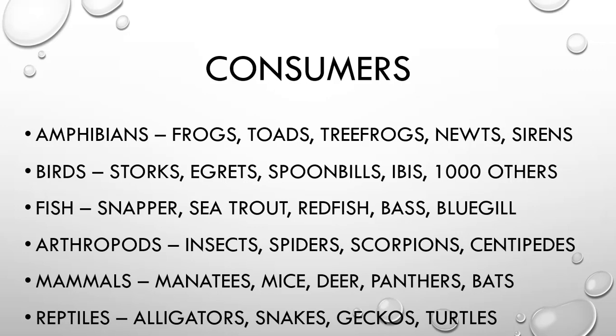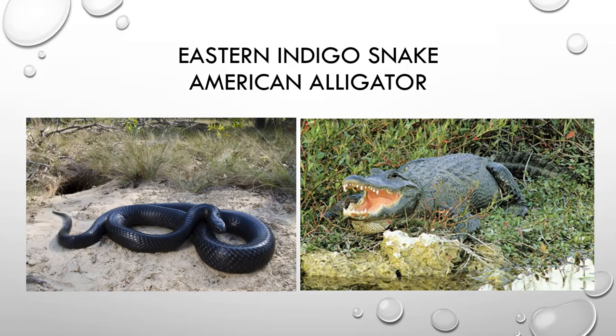Finally, reptiles include the American alligator — a special one for the Everglades — along with many types of snakes, geckos, turtles, and sea turtles, since the ocean borders the area making it an estuary. Two native species highlighted are the eastern indigo snake, which is several feet long, and the American alligator, which is only found in a few places in the world, mainly along the southern United States.